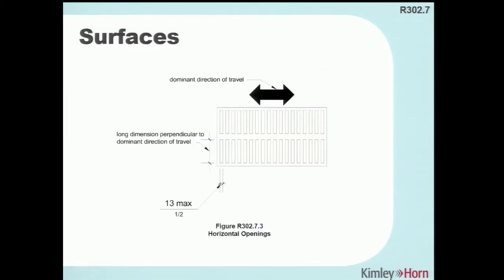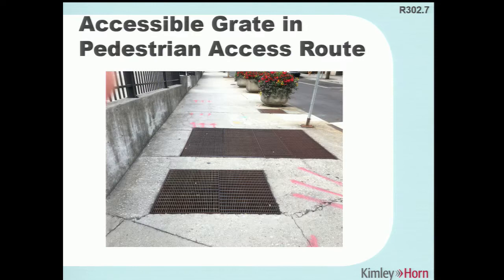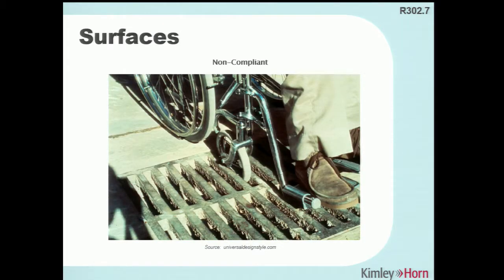Horizontal openings have a maximum of half an inch — this applies to grates in the sidewalk. Make sure grate slits are aligned perpendicular to the pedestrian path of travel, or equally accessible in both directions, so that wheelchair wheels don't get stuck if installed in an improper orientation.